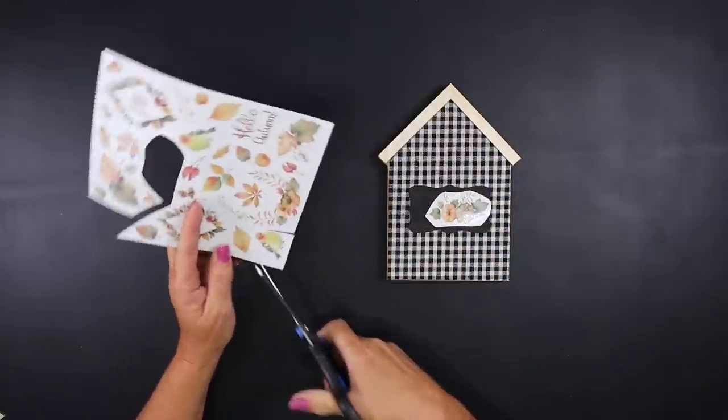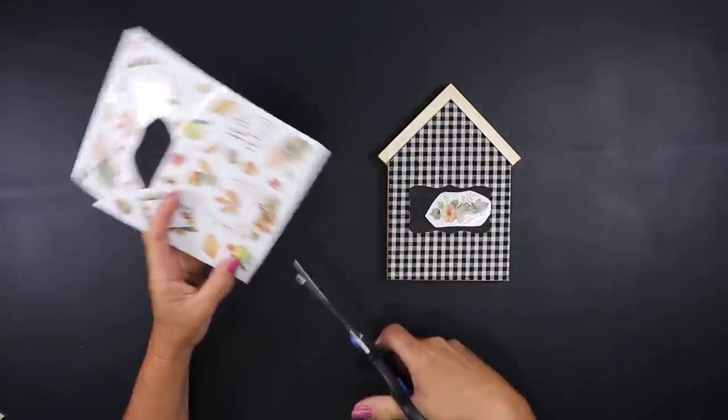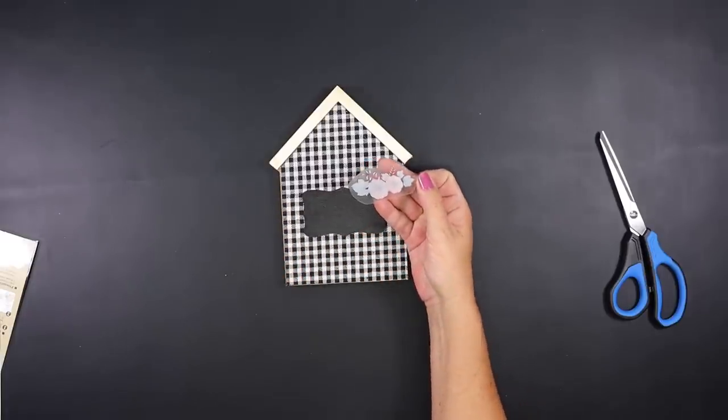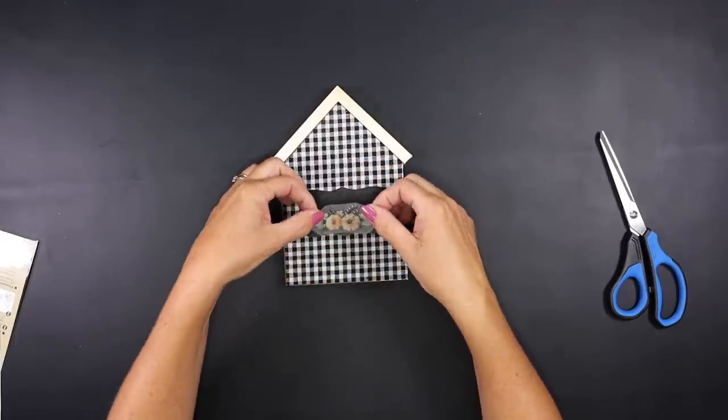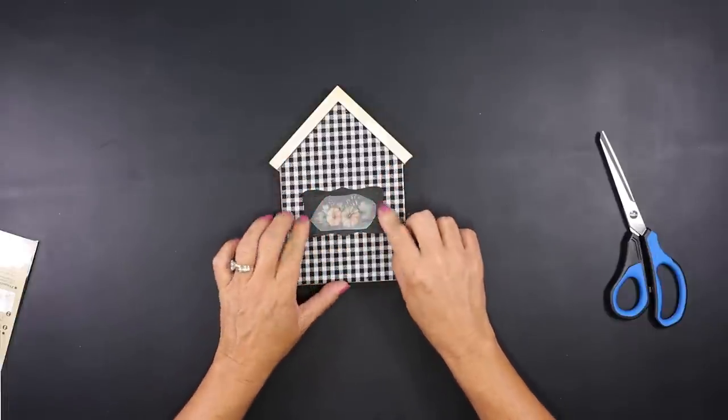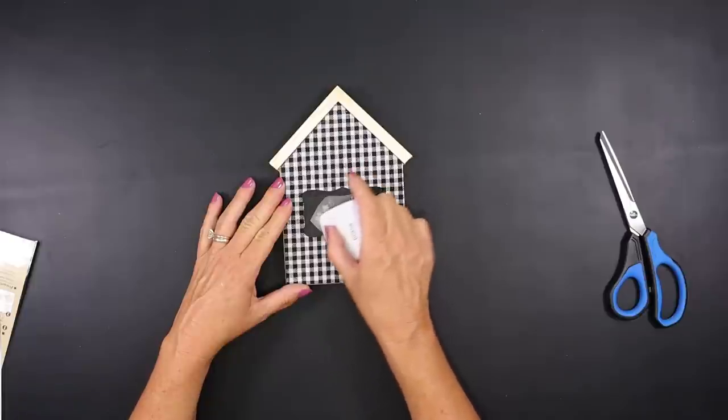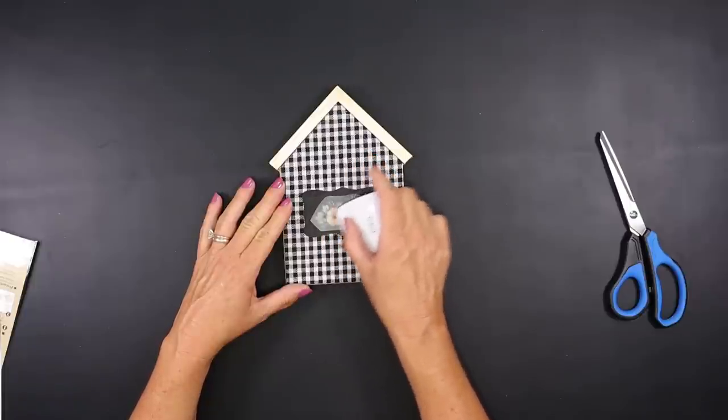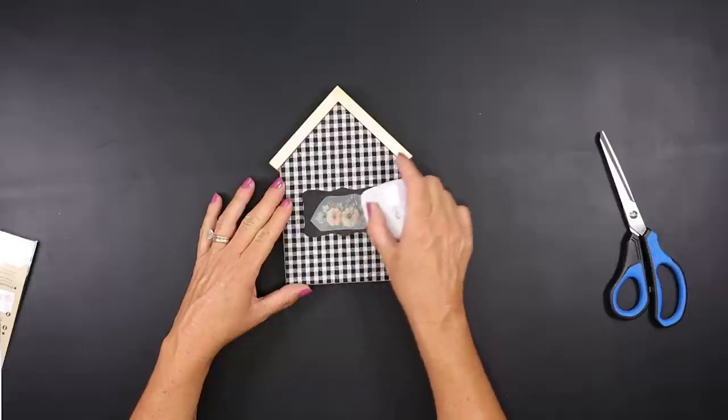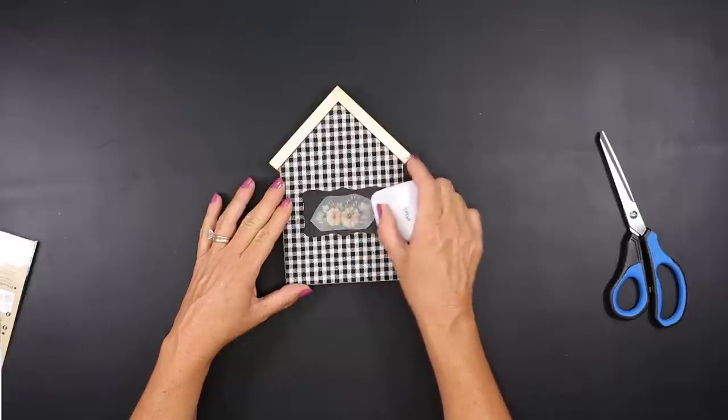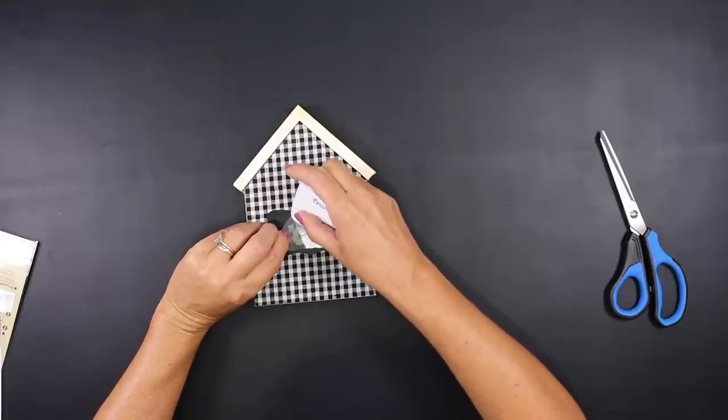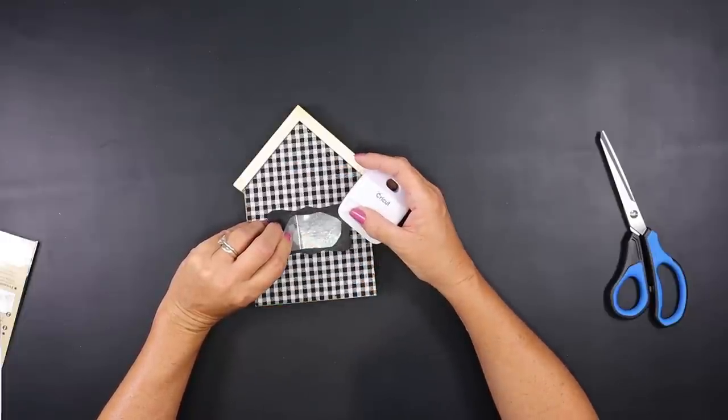If you have never used their rub on transfers, they're very easy to do. You just peel the backing off of it, place your transfer down where you want it on your project, and then use something with a flat edge like a credit card or a burnishing tool. Go over the plastic on top of the image and make sure that it adheres to your project. When you get ready to pull that plastic back, do it very slowly. And if some of the image is not staying on top of your project, just burnish it some more and then slowly lift that plastic away.